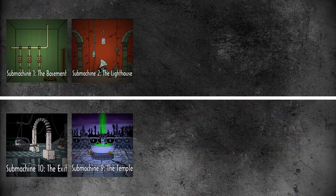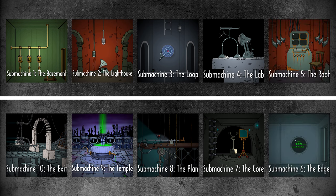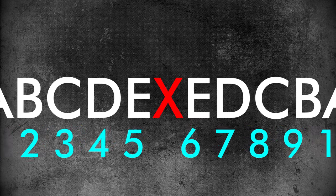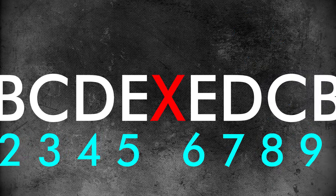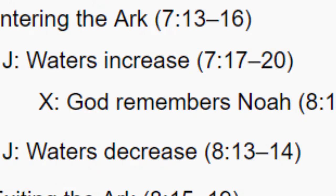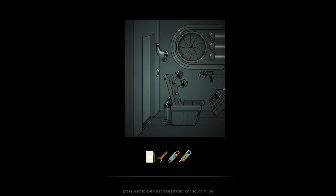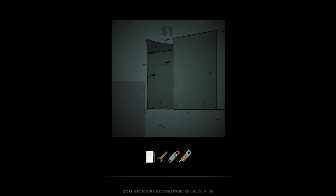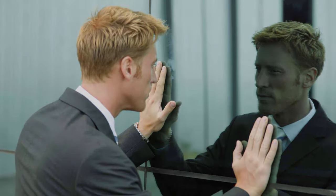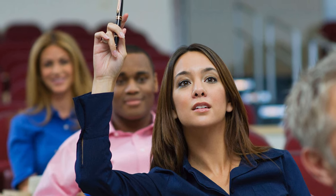With all those similarities and differences covered, there's only one element left to talk about: the mysterious X mentioned at the beginning. The X is the center crease on the paper, or the mirror's edge — it has no reflected element and stands alone as a unique event. In the chiastic structure of Noah and the Flood, the X moment is when God acknowledges and remembers Noah. In Submachine, the X moment is the space between Subs 5 and 6 when the mover is on its journey toward the cliffs — the only moment when transportation is completely physical without using any devices that rely on karmic energy.